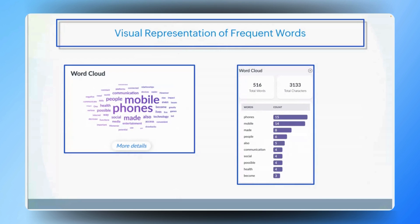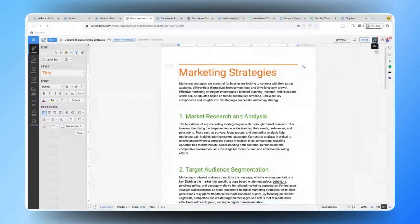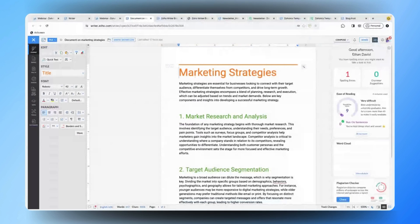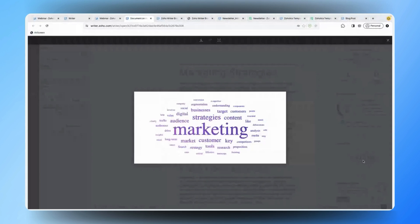This makes it easy to adjust the content for variety and better readability. Plus, you can track the overall word and character count, ensuring your content is concise and impactful. Let me quickly get into the document and show you how to access this feature. You'll be able to open the Zia panel and in that you can find the word cloud available. This indicates the most frequently used words in the content that you have in your document.